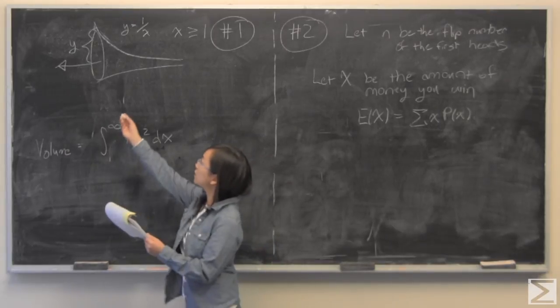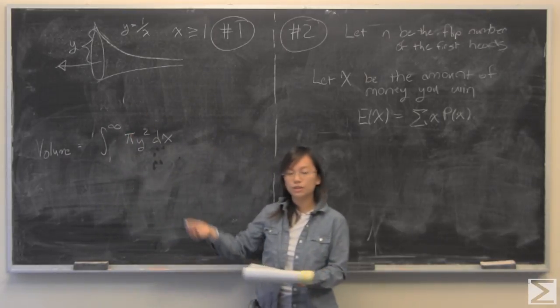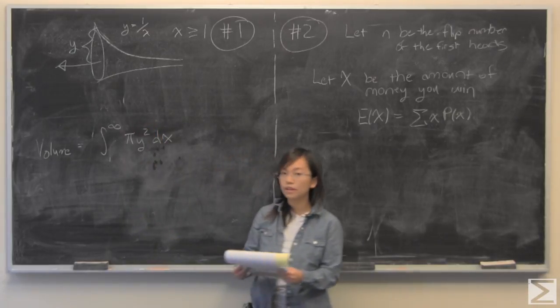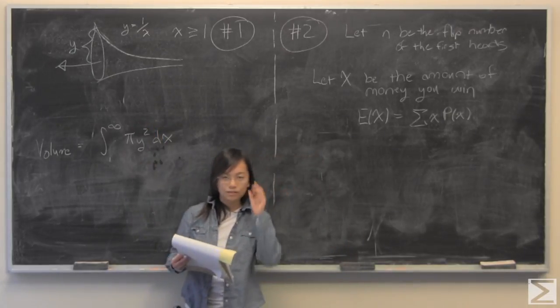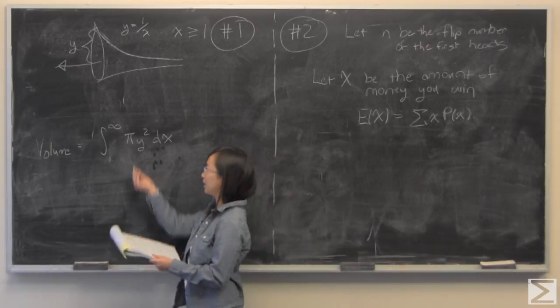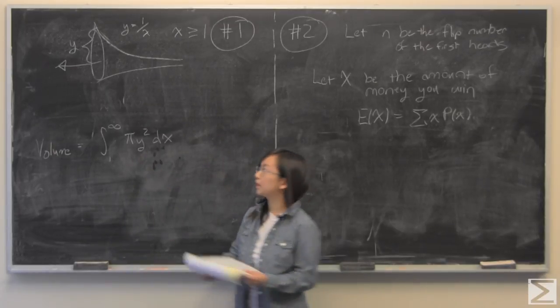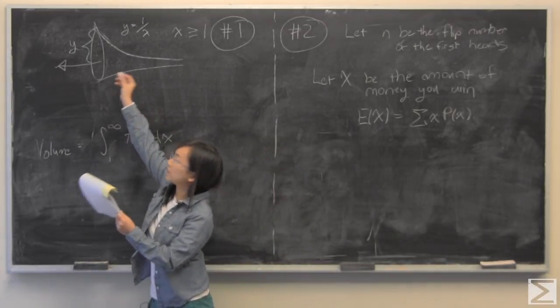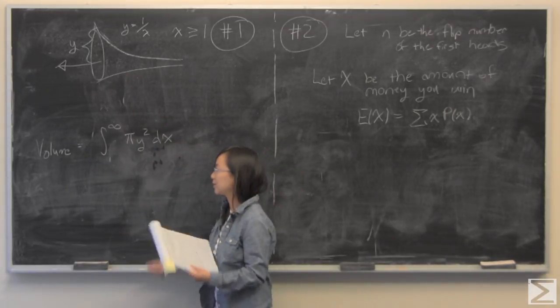We're using circular disks for this method and of course the area of a circle or disk is pi r squared, and r is going to be equal to y because that's going to describe how far we go from the center to the end, which is the radius.